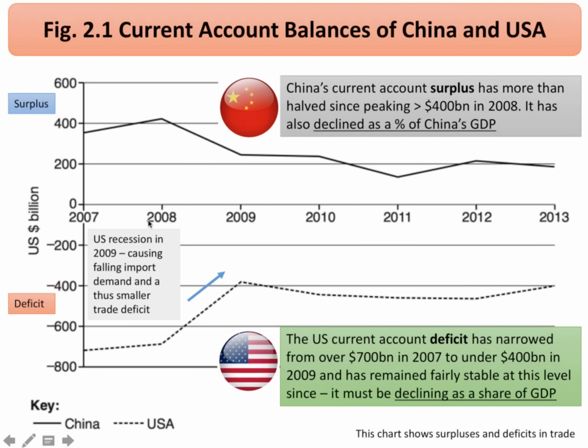Let's go first of all to figure 2.1, which shows the current account balances for China at the top and the United States at the bottom. The key things to take away from this chart: first of all, we're measuring the trade balance — X minus M — in billions of US dollars, a standardised measure.